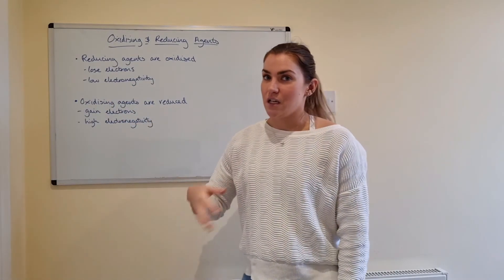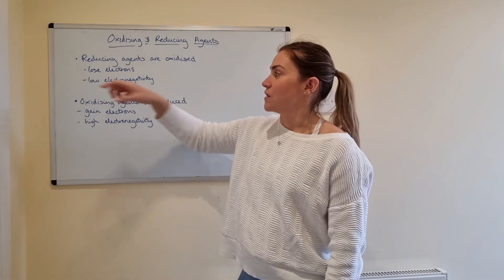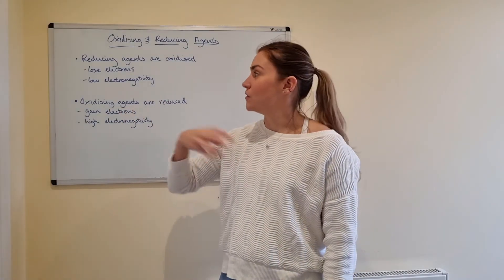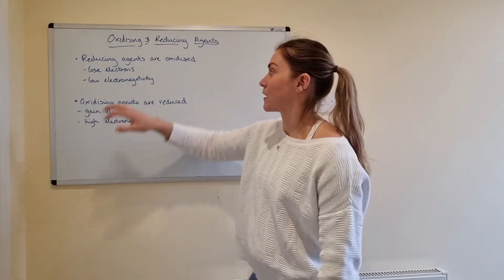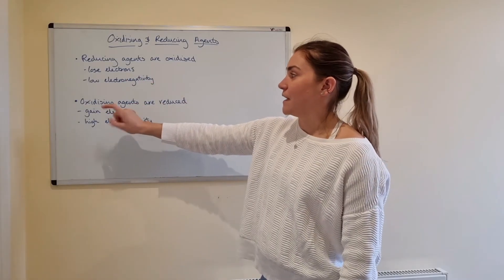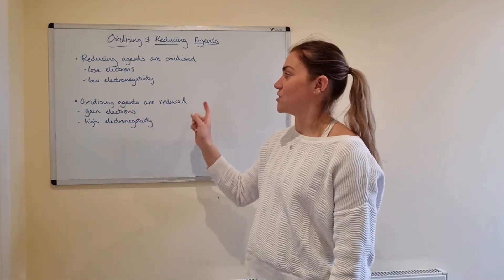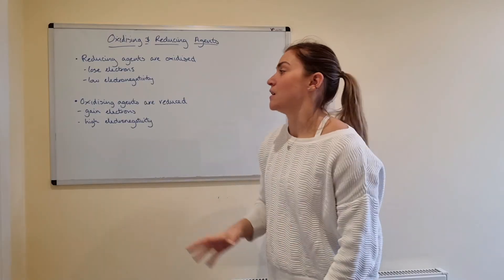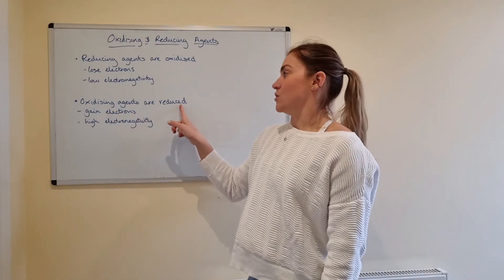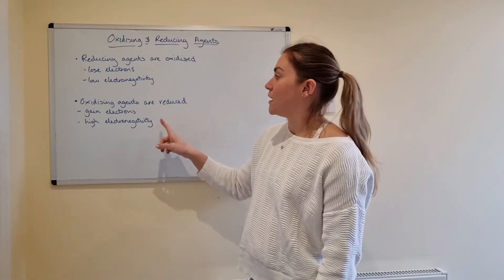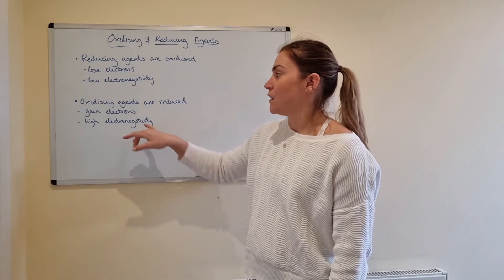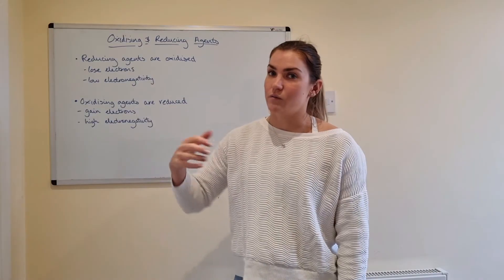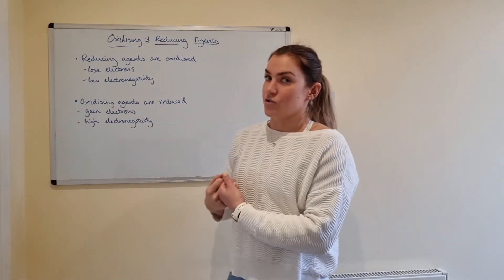Because reducing agents are oxidized, that means they are losing electrons in the reaction and they generally therefore have low electronegativities. Anything that has a low electronegativity is usually a good reducing agent because if its electronegativity is low it doesn't have a great attraction for bonding electrons, which means it will freely give them away. The opposite is that oxidizing agents are reduced — they gain electrons. Just remember OIL RIG: oxidation is loss, reduction is gain. Oxidizing agents have a high electronegativity and readily take electrons on.